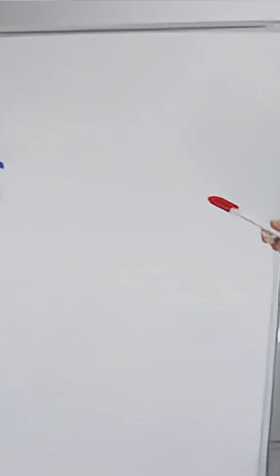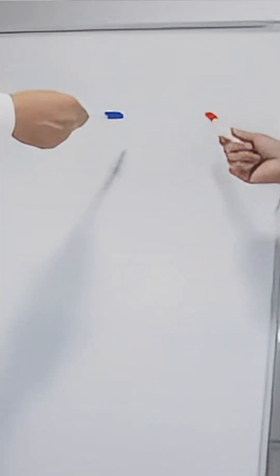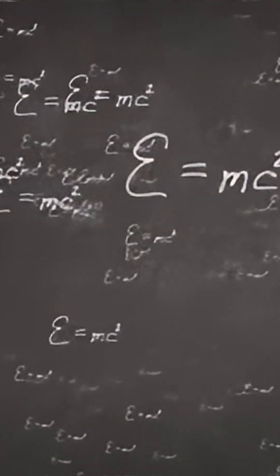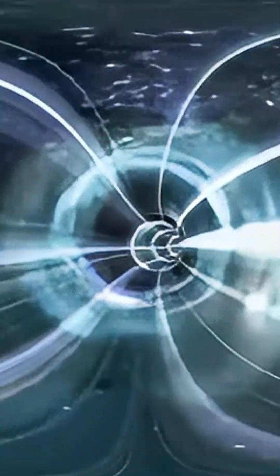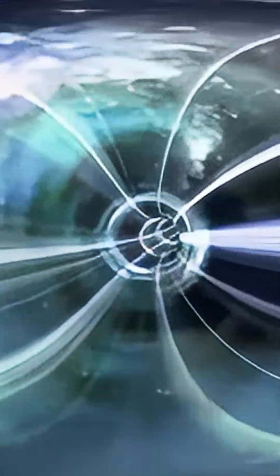But here is where it gets deep. Negative mass is not just some thought experiment, it shows up in equations in general relativity. To keep wormholes stable, or build something like a warp drive, you would need negative energy or negative mass to bend spacetime in the right way.